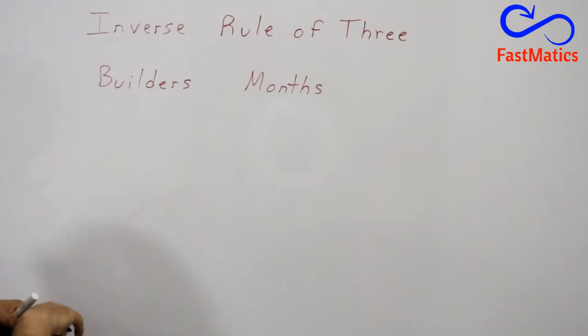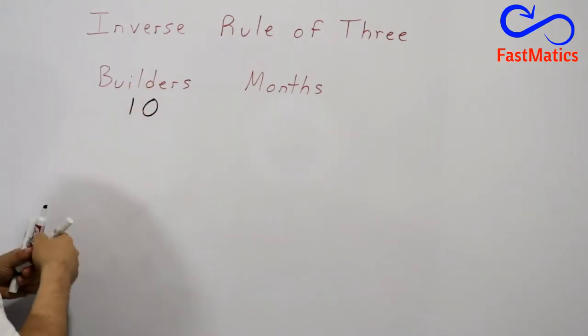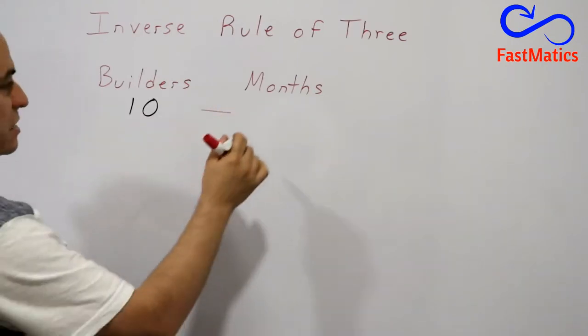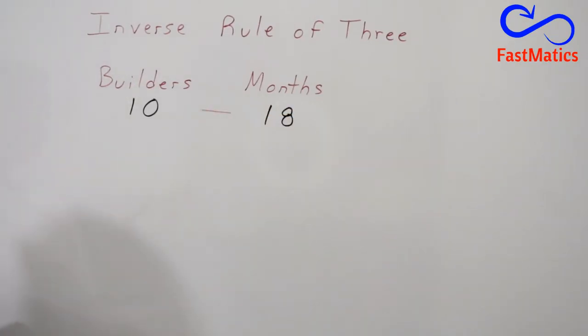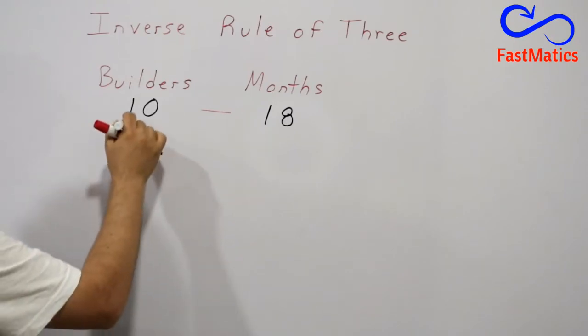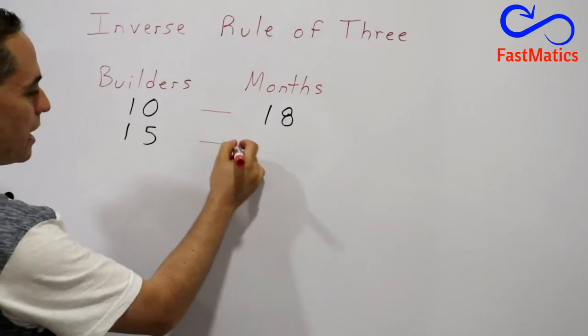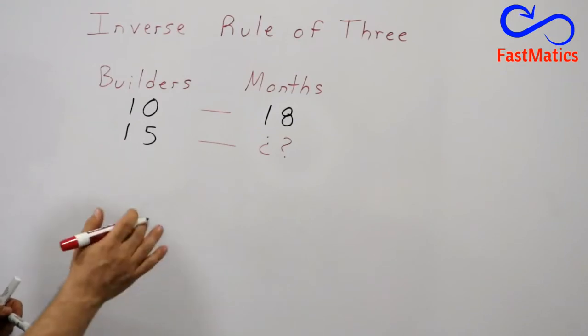Imagine you have 10 builders making a house in 18 months. What happens if now you have 15 builders instead of 10 builders? How many months do you need to finish that house?